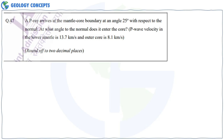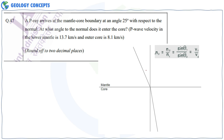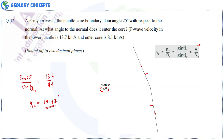Question 47: A P-wave arrives at the mantle–core boundary at an angle of 25° with respect to the normal. At what angle to the normal does it enter the core? Using Snell's law: sin(θ₁)/sin(θ₂) = v₁/v₂. So sin(25°)/sin(θ₂) = 8.1/13.7. Solving, θ₂ = 14.47°.